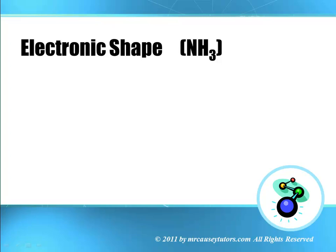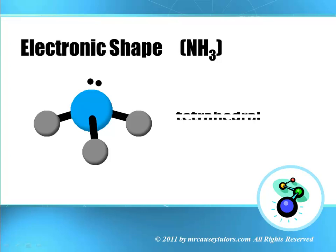Electronic shape of ammonia. And see how that looks there. This is tetrahedral because we include the electron pair as well.